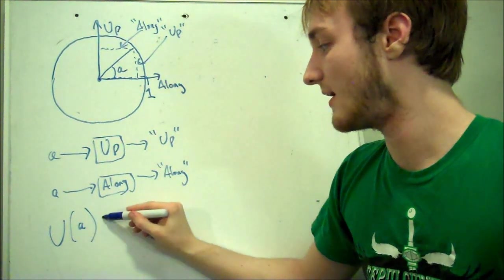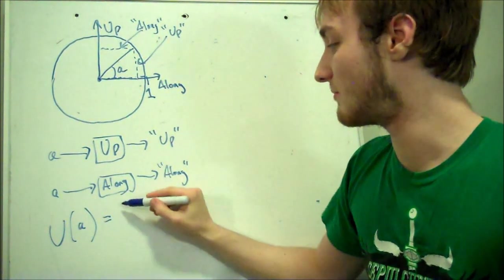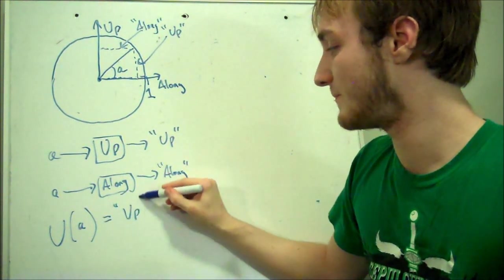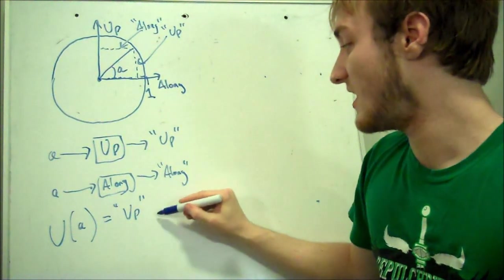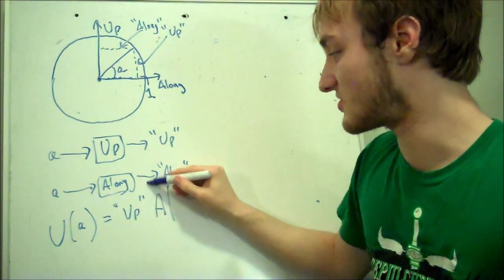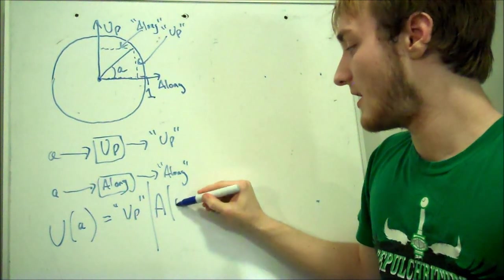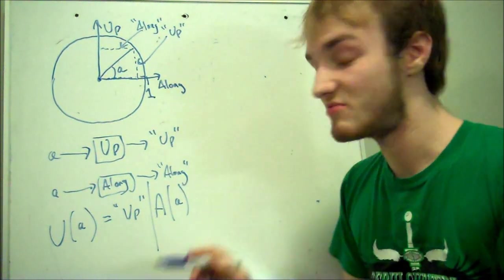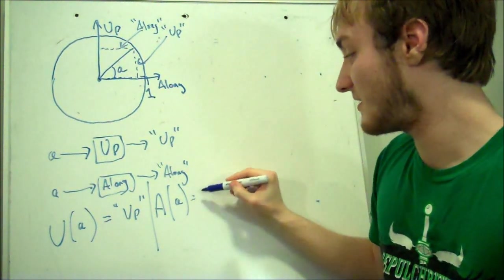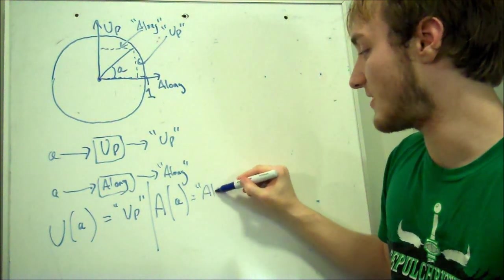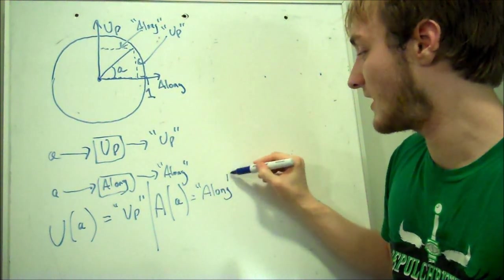This is my input, A, and it's going to spit out my output, up. And I'm using the along machine. I'm going to open my brackets and put in my input, and it's going to give me this nice output called along.